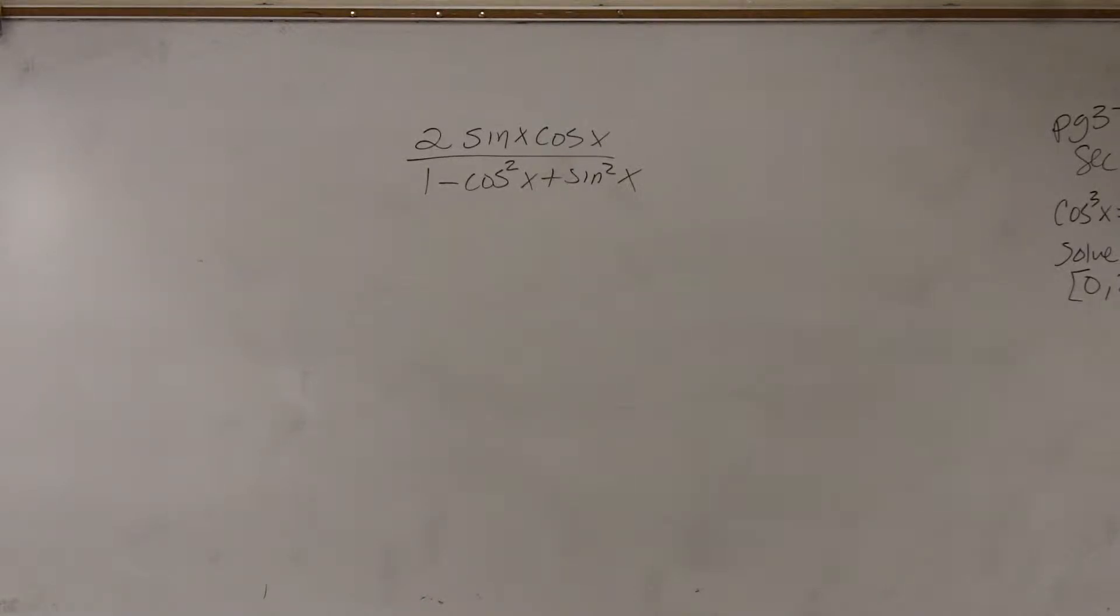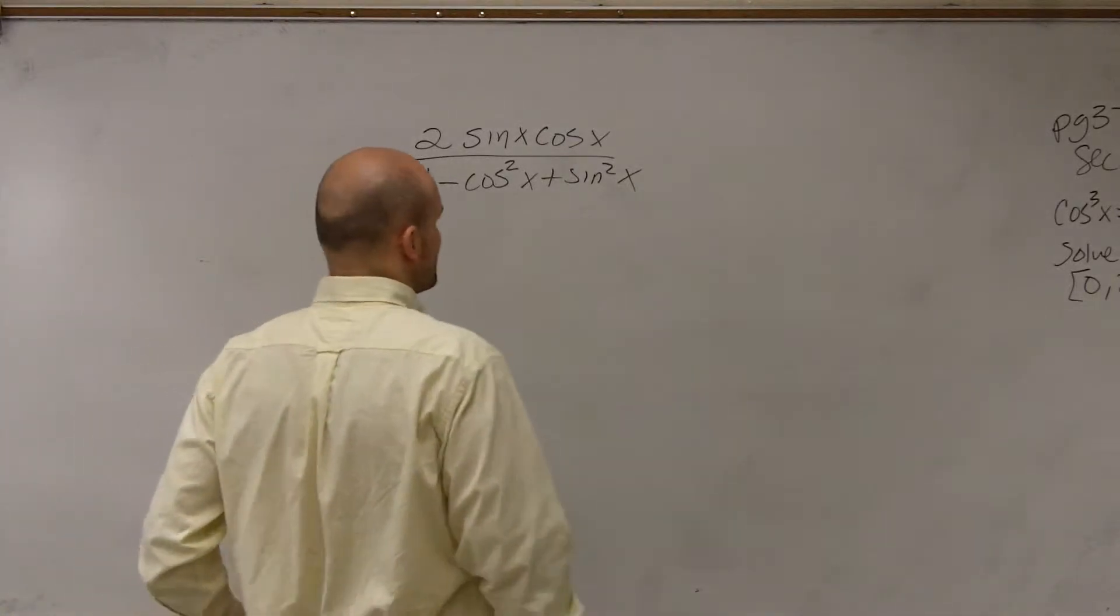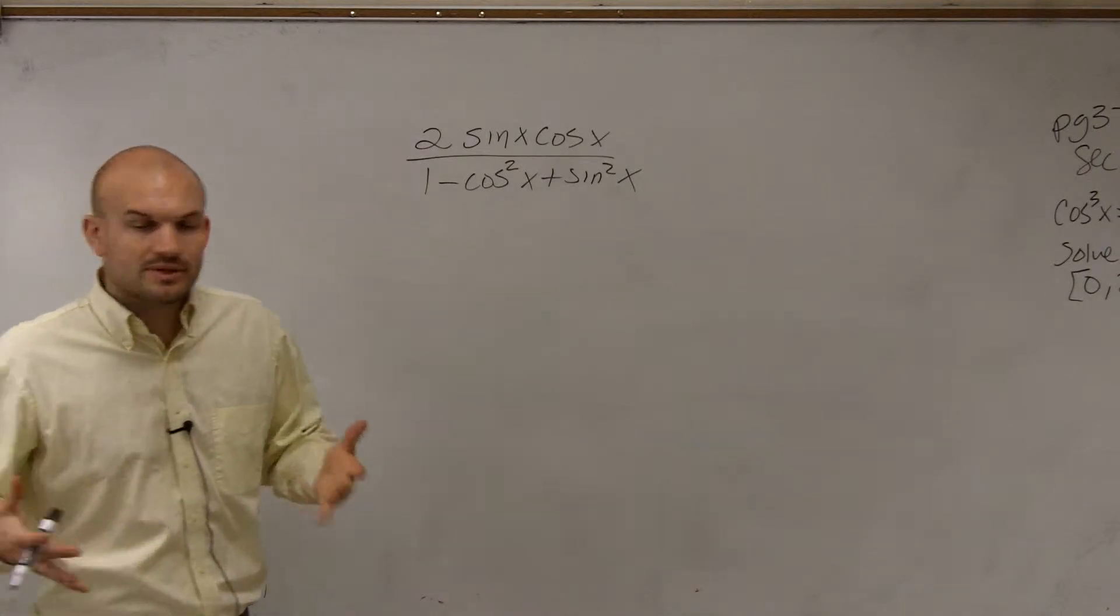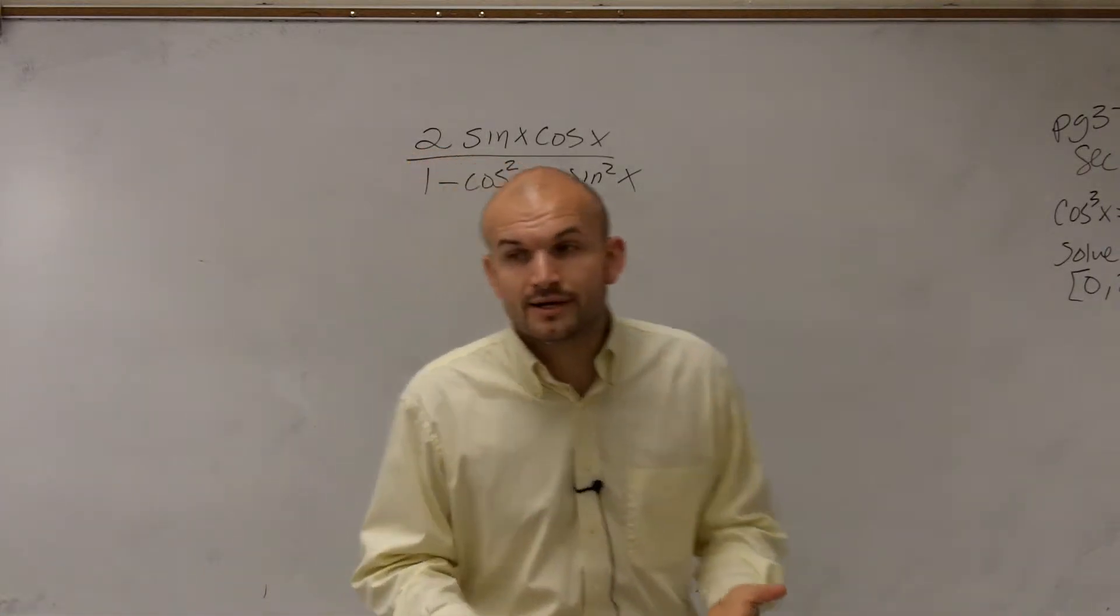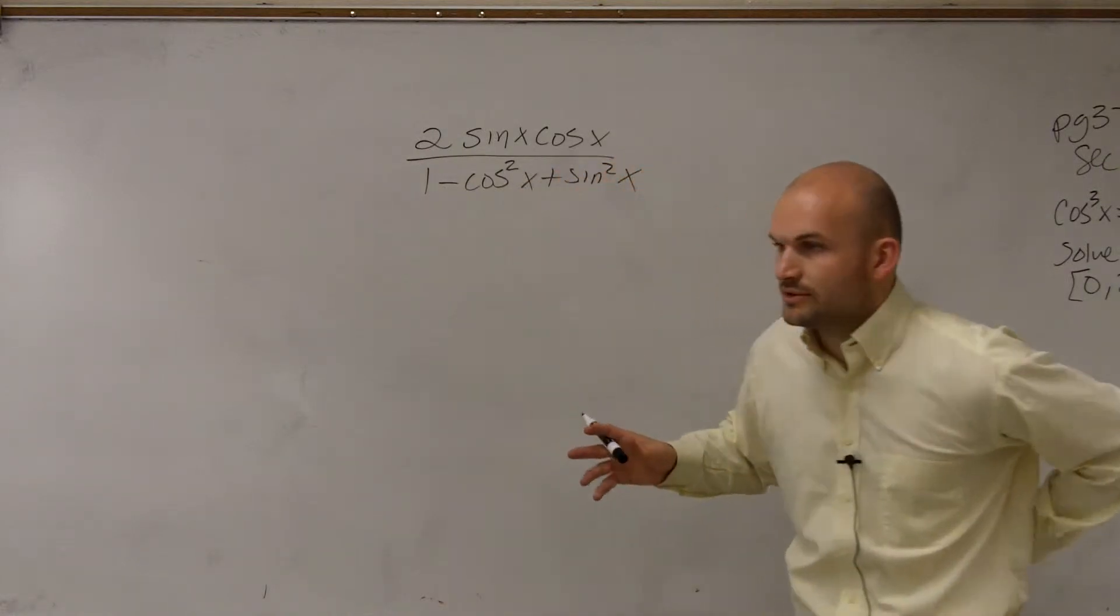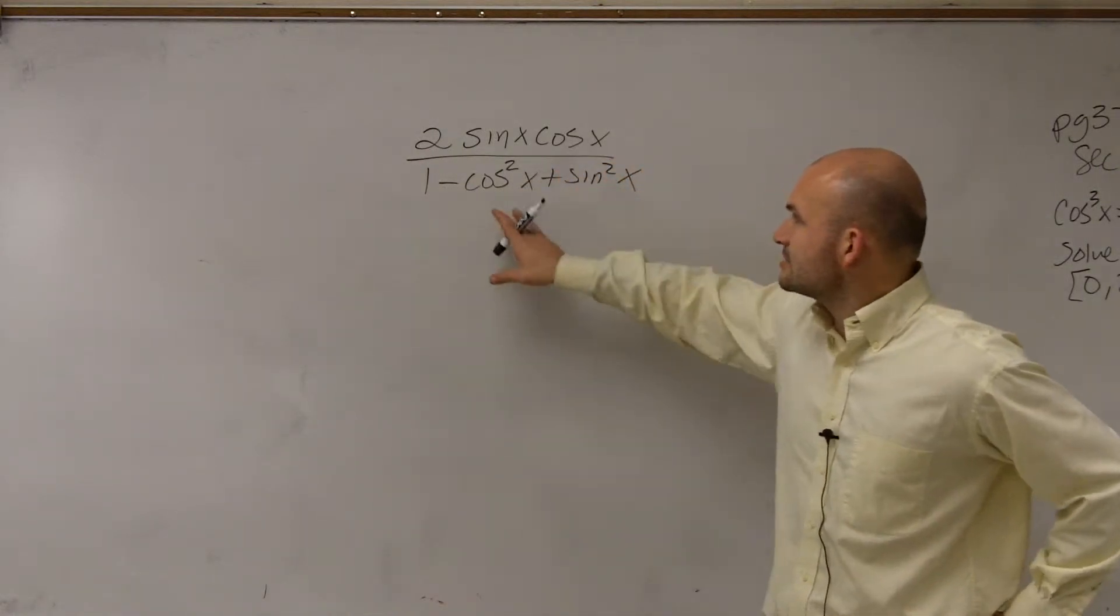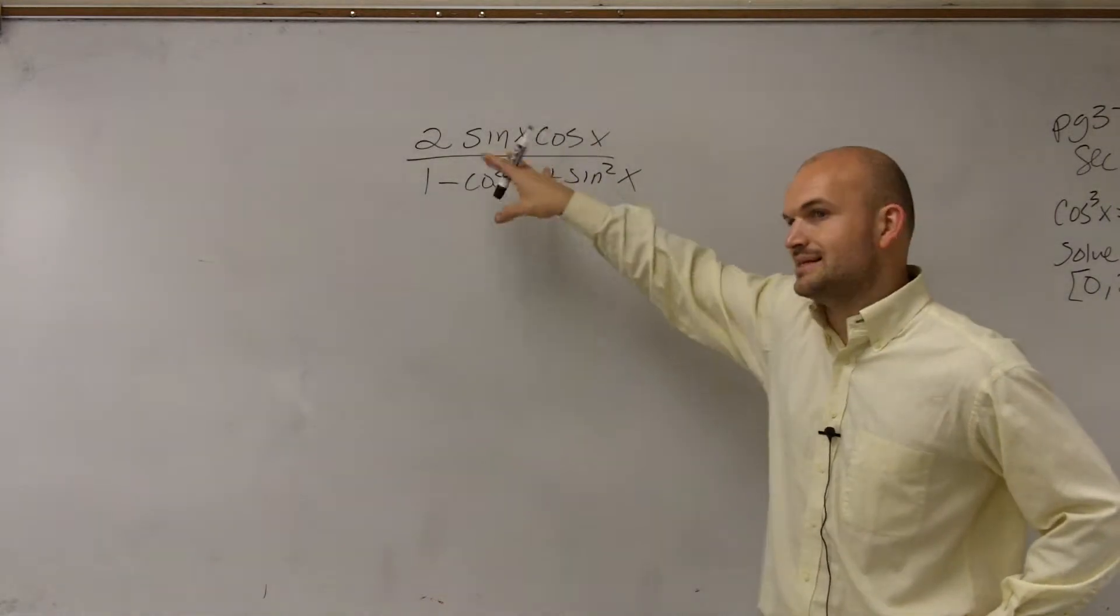All right. So for this problem, we want to simplify it. When looking at it, we look at our Pythagorean identities. We know that sine squared plus cosine squared equals 1. But the main important thing when trying to simplify is we're going to want to get rid of this denominator.